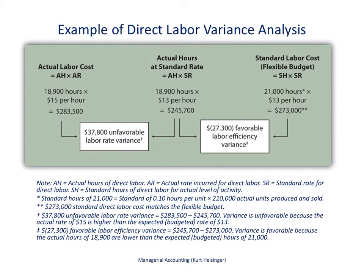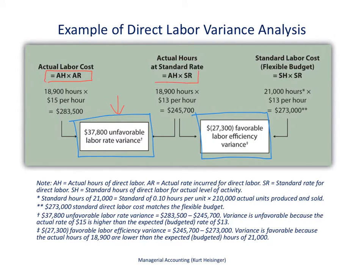Here's an example with detailed calculations needed to come up with the labor rate variance and labor efficiency variance. Taking a broad view first: the labor rate variance is shown in the box on the left and the labor efficiency variance in the box on the right. The labor rate variance is the difference between actual hours times the actual rate per hour, and actual hours times the standard rate per hour — giving us a $37,800 unfavorable variance.